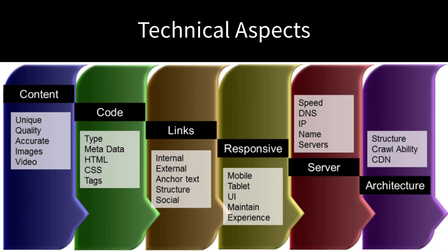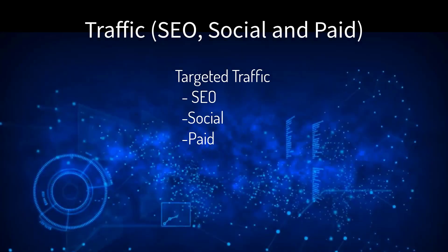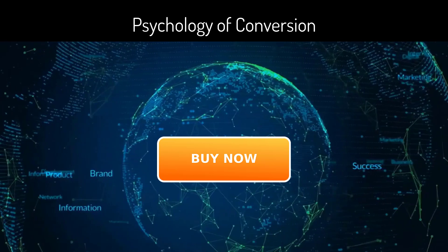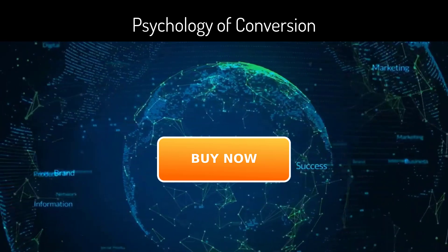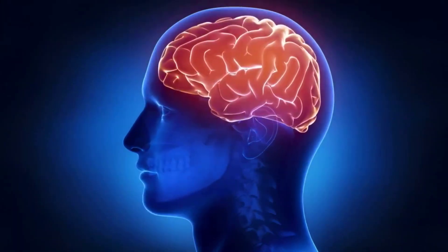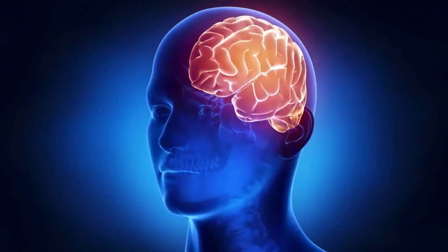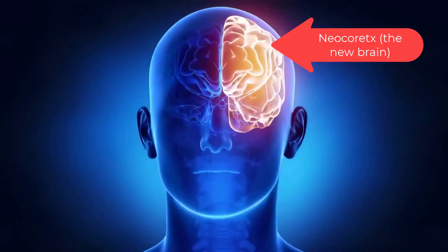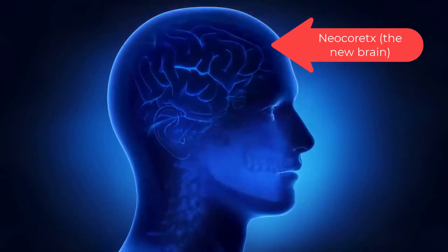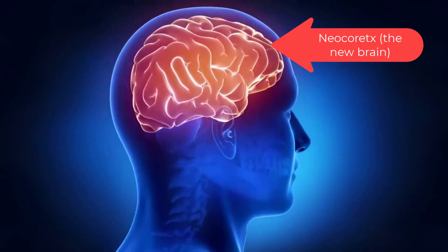Of course, all online marketing must have three elements in alignment: the technical aspects — servers, layout, code structure — the traffic — SEO, social, and paid — and the psychology of conversions. Your brain has three basic layers and only one real decision maker.